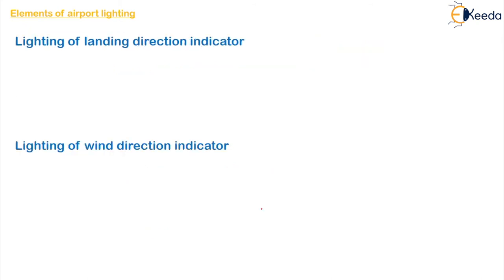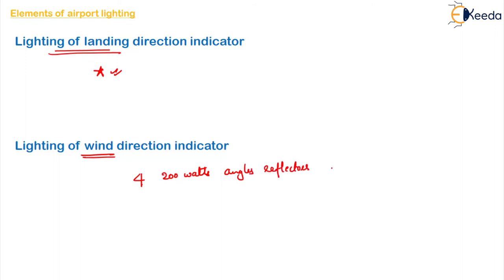The fifth element is the lighting of the landing direction indicator, which is lit so that the landing direction is properly visible at night. Next is the lighting of the wind direction indicator, which is illuminated by four 200-watt angle reflectors placed at a distance of 1.8 meters above the top of the cone. The wind direction indicator has a cone arrangement providing continuous lighting at any position of the cone, allowing its use at night and during bad weather conditions.